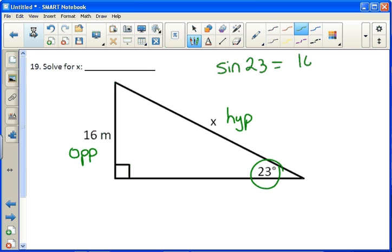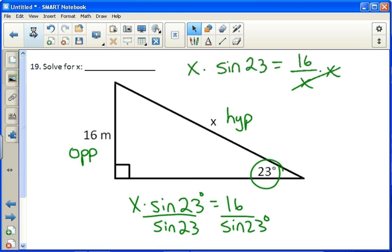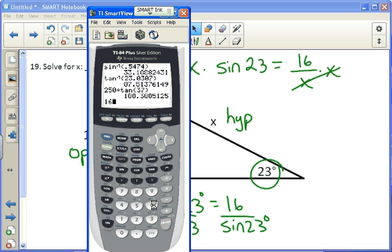Now to get x, we multiply both sides by x. And I'm going to come down here. x times sine 23 equals 16. Then we divide both sides by the sine of 23 degrees. So that's what we need to plug in the calculator. 16 divided by the sine of 23 degrees. Then we get 40.949.